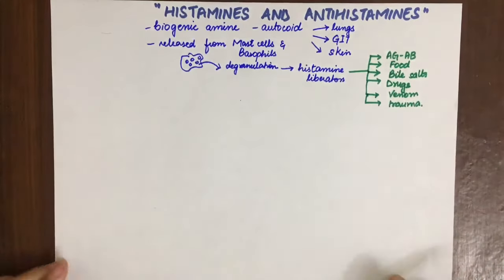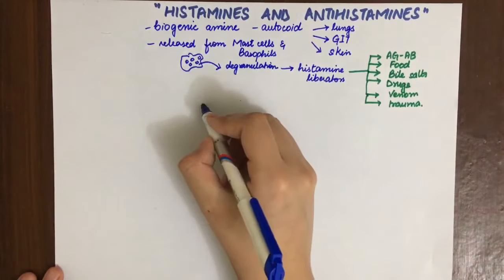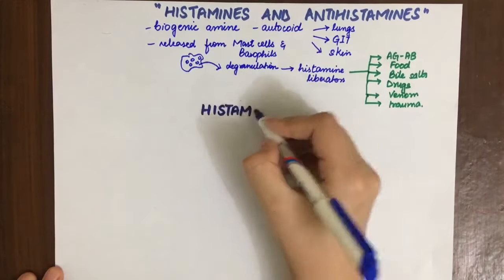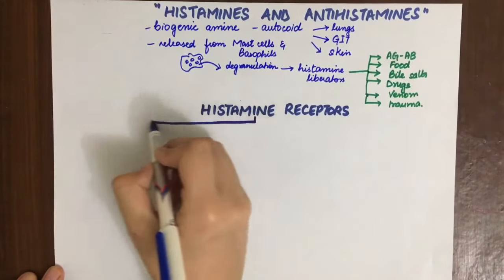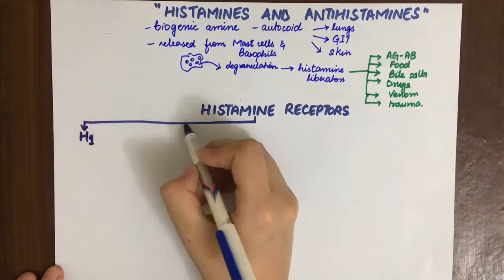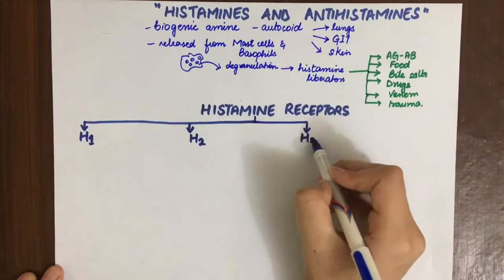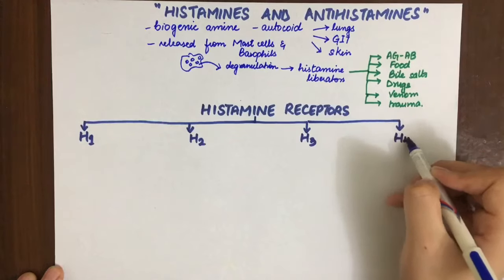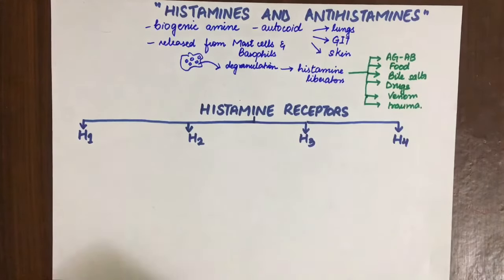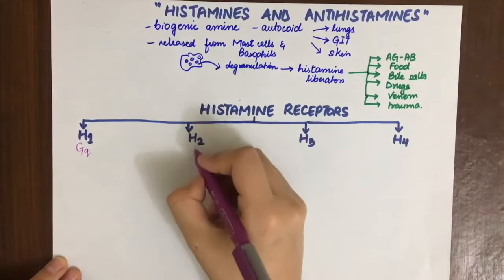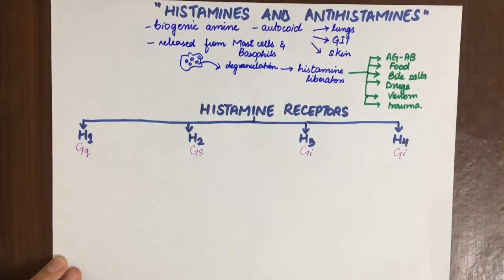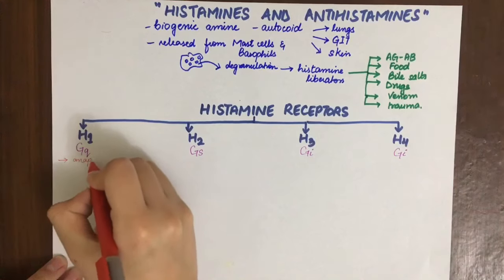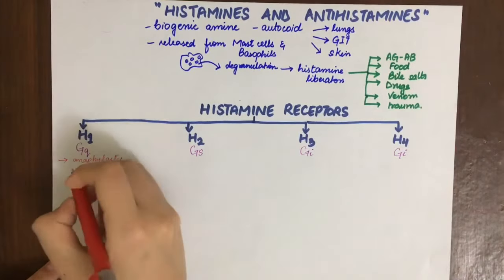When histamine is released, there are four types of histamine receptors it acts on — all are G-protein coupled receptors: H1, H2, H3, and H4. H1 is a Gq-coupled receptor, H2 is Gs-coupled, and H3 and H4 are both Gi-coupled. H1 is primarily involved in anaphylactic shock and inflammation.